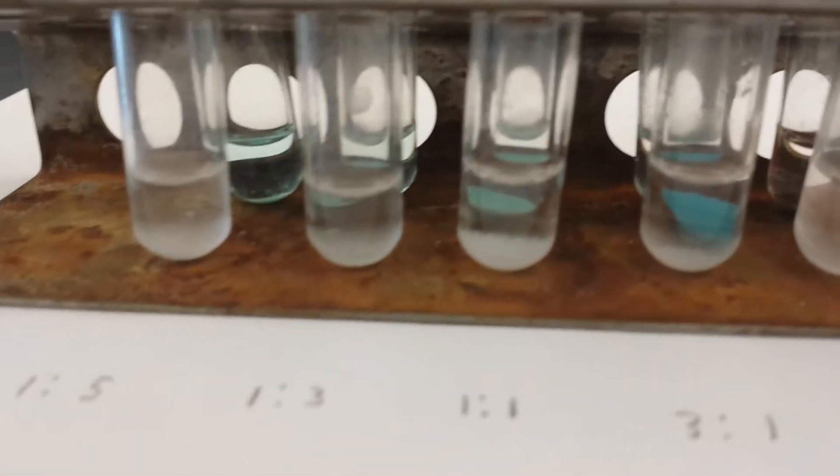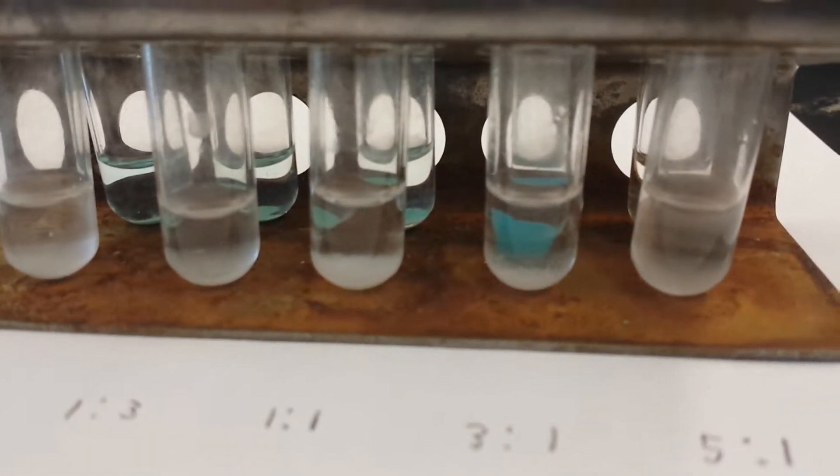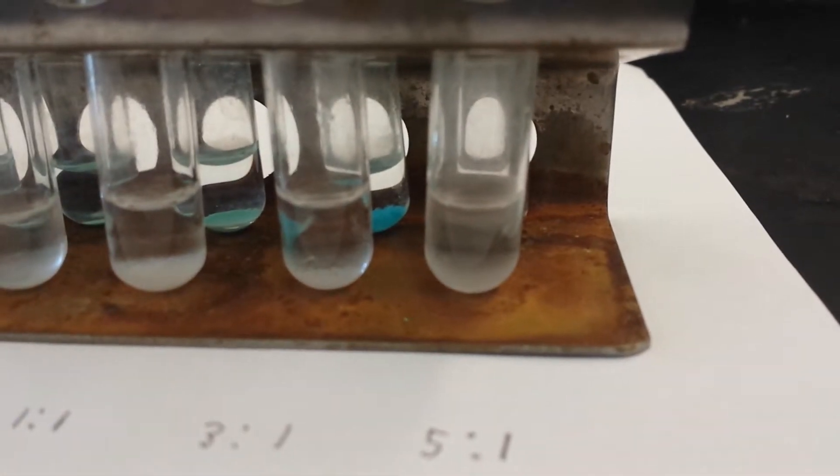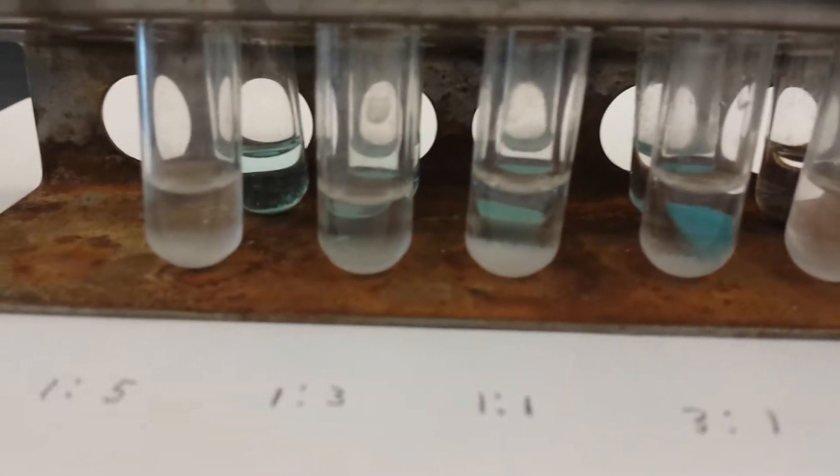And if we look at the 1 to 5 ratio, 1 to 3 ratio, 1 to 1 ratio, 3 to 1 ratio, and 5 to 1 ratio, the 1 to 1 ratio is clearly the biggest precipitate.